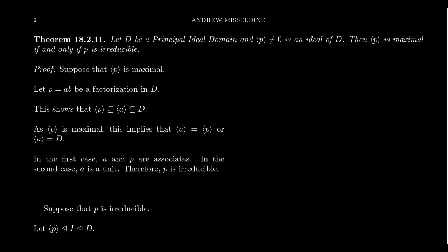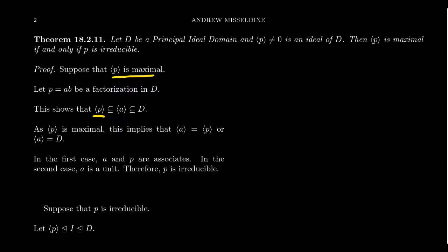This is an if-and-only-if statement, so we go in both directions. First, suppose the principal ideal generated by P is a maximal ideal; we must show P is irreducible. Consider a factorization P = A × B. Since P = A × B, the product belongs to the principal ideal generated by A, so the ideal generated by P is contained inside the ideal generated by A. Since the ideal generated by P is maximal, the ideal generated by A must equal either the ideal generated by P or the whole ring.